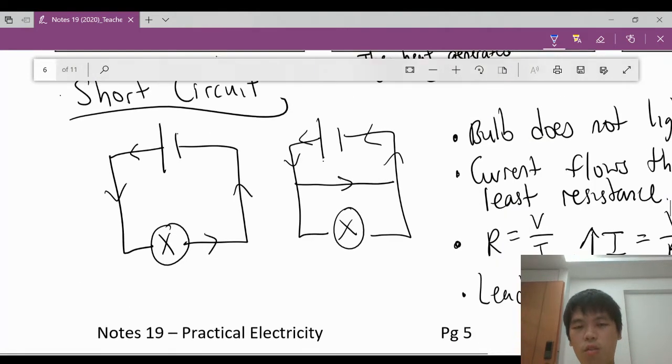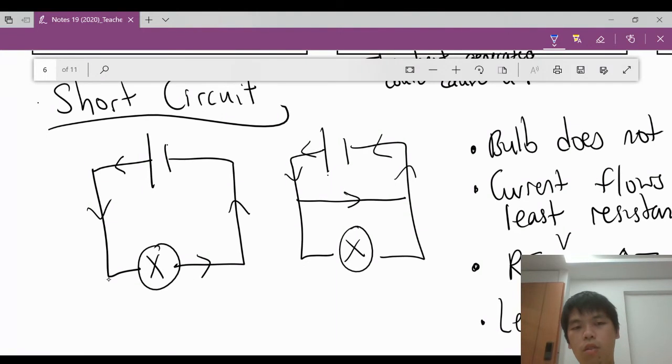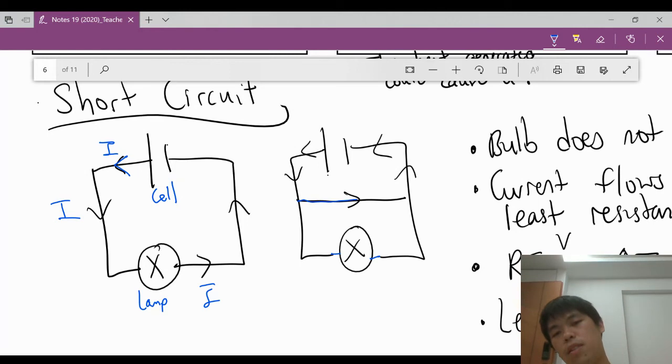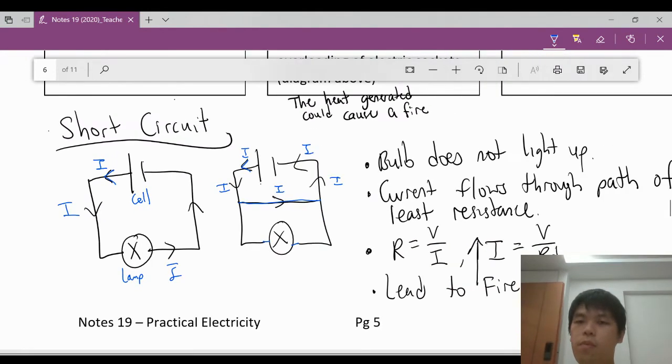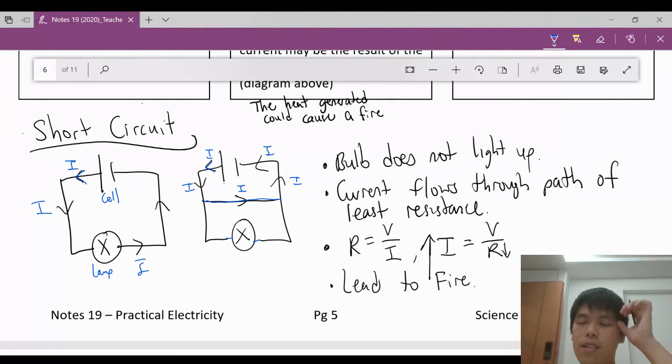So what is short circuit? I have a very simple diagram here. We have a cell, we have a lamp. A usual circuit will have its current flowing all over the circuit. Now what happens if we were to have damaged insulation such that the live wire and the wires inside are able to come into contact with each other? What will happen is there will be a new path that is being set up here. This new path will allow the current to flow to the new path. Why? Because this new path has very little resistance.